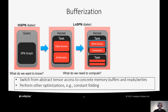The next step in our compilation flow is bufferization. So far, we've been using abstract tensors, which allows us to track values generated and consumed by operations very precisely — especially useful for graph partitioning. But we now need to switch to a more concrete representation: memory buffers and reads and writes to those buffers. In this step, we also perform other optimizations, for example classical constant folding, common in compilers.